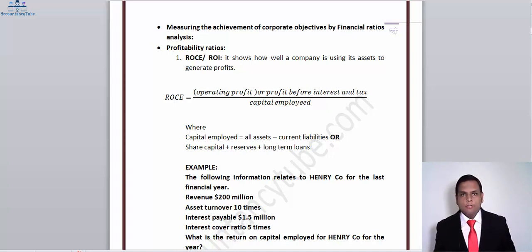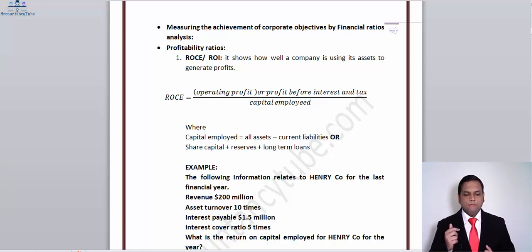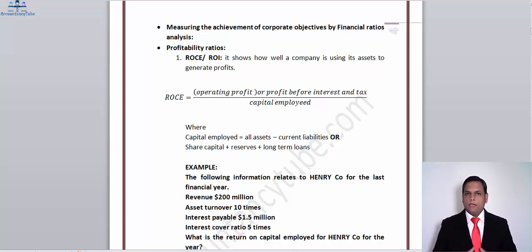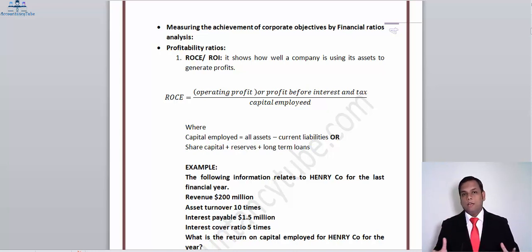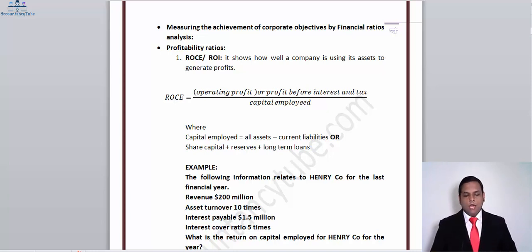For the ease of learning, I have compiled ratios from across the syllabus into this chapter only, for better understanding and a solid grip on this topic. You will also see some examples during the topic in the notes — we will not be doing them right now because these are exam-style questions and a bit technical. We will be doing that in the last video once we are done with ratio analysis and have a good grip on it. If you come to page number four you will see the heading 'Measuring the Achievement of Corporate Objectives by Financial Ratios Analysis'.